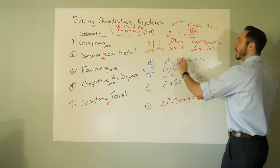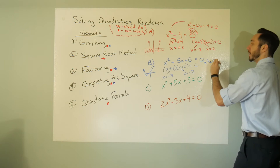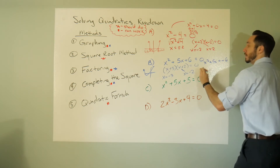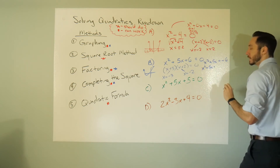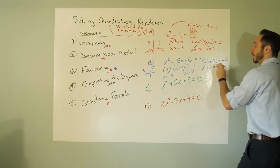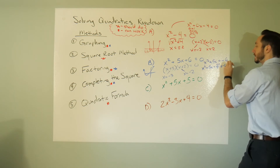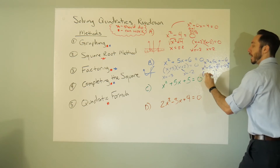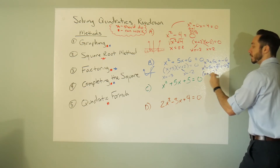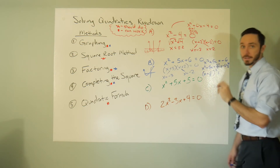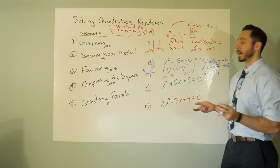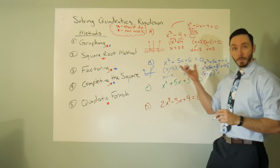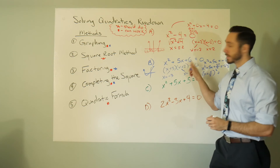Completing the square works but you really shouldn't do it since it's already factorable. The process: move 6 to the right, so x² + 5x = -6, take 5, cut it in half and square it to get 25/4, add to both sides. Inside you get (x + 5/2)² equals whatever that expression is, then take the square root. It works but factoring is much faster. Quadratic formula always works: a=1, b=5, c=6.